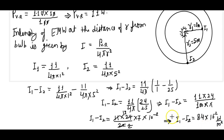So the answer is I1 minus I2 equals 84 × 10⁻² watt per meter square. Since the question states the answer is A × 10⁻² watt per meter square, the value of A is 84.